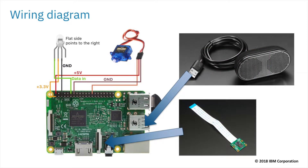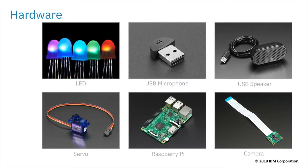The TJ Bot uses hardware that is readily available online and in stores that sell Raspberry Pi components. The only required part is the credit card sized computer called a Raspberry Pi. The remaining parts can be added as desired. An LED, servo, and speaker allow the TJ Bot to communicate with the user. A camera and a microphone allow the TJ Bot to capture the environment.